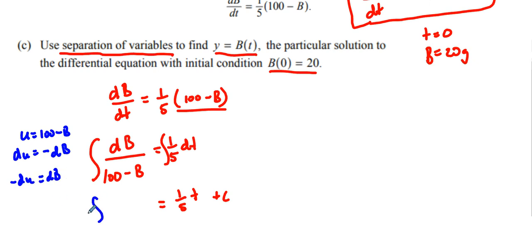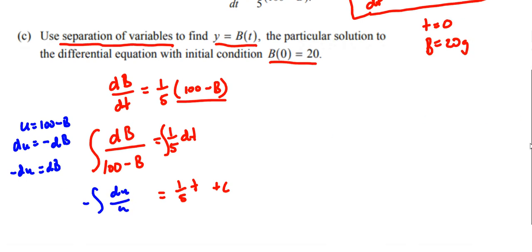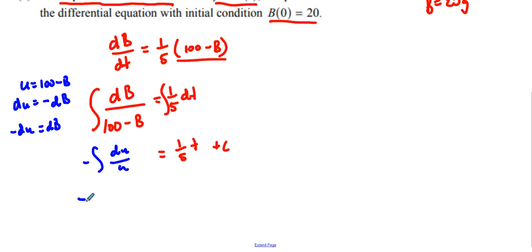So when we have that, we're going to have this negative du over u, which then is going to turn into negative natural log of u. What's u? u is 100 minus b, equals 1/5 t plus c. The negative is what usually screws up students. Do not forget that, or you will get point deduction, or won't achieve all the points that you could have achieved. So be careful with that coefficient next to the b, but we are using natural log.